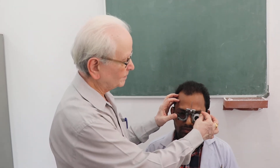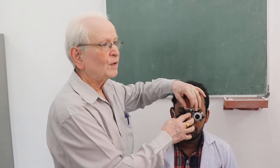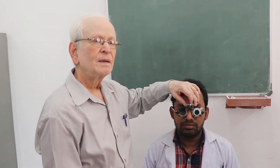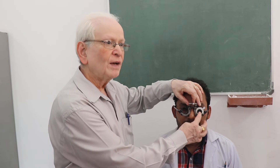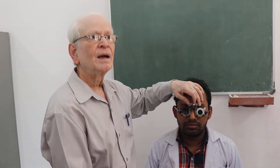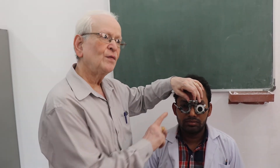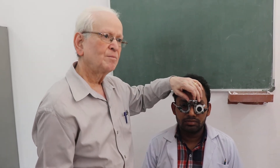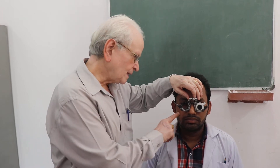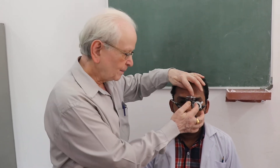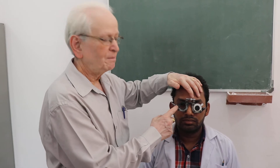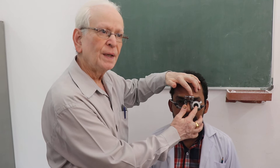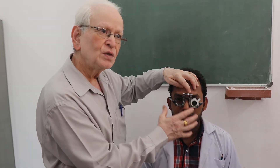And an occluder. The universal trial frame is put on the face of the patient. The occluder is put in one eye. Always try to record the right eye first. Tell the patient not to close the eye under examination — the eye behind the occluder should also be open, and don't squeeze your eyes.